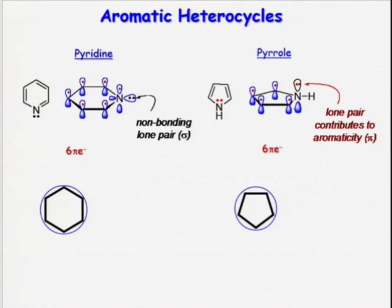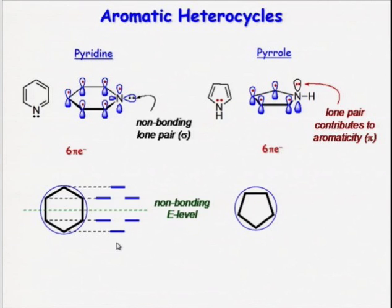Another tool introduced to us by Professor Moore was the Frost diagram. The Frost diagram involves inscribing the polygon we are concerned with in a circle, and by convention we always put one of the vertices at the bottom. Everywhere on the circle where a vertex touches the circle is considered a molecular orbital, with the bottom half being bonding molecular orbitals, the midpoint being non-bonding, and the top half being the high-energy antibonding molecular orbitals. Now that we know there are 6 pi electrons in the pyrrole system, we can fill up the molecular orbitals from the Frost diagram, and we see that all 6 pi electrons contribute to the bonding molecular orbitals, with none contributing to non-bonding or antibonding levels.